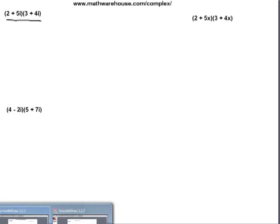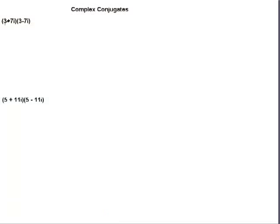We'll spend the first half looking at expressions like that, and the second half we will look at a special case of multiplying complex numbers called the complex conjugates, and they look like 3 plus 7i times 3 minus 7i.